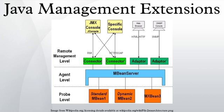JMX uses a three-level architecture: the probe level, also called the instrumentation level, contains the probes instrumenting the resources; the agent level, or MBean server, is the core of JMX and acts as an intermediary between the MBean and the applications. The remote management level enables remote applications to access the MBean server through connectors and adapters.